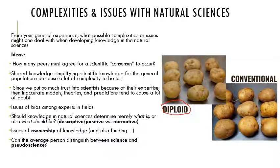Since we put a lot of trust into scientists because of their expertise, especially in the medical field, when we do have inaccurate models, theories, and predictions it tends to cause a lot of doubt. Scientists are constantly trying to falsify their belief systems and look at things from different angles — they will come up with different conclusions — but the public tends to emotionally lose trust or feel doubt when they see things changing or being wrong. Issues of bias among experts and how one school of thought wins out over another are also knowledge issues in natural sciences.